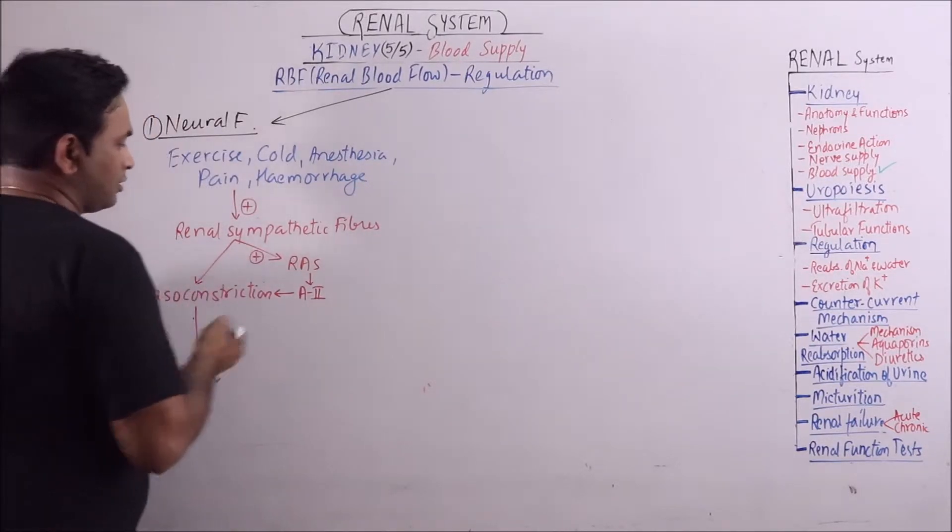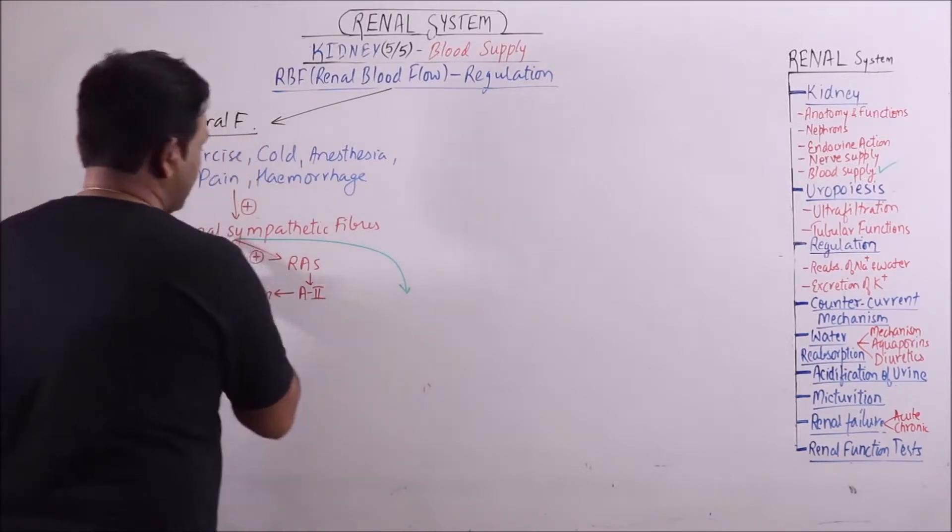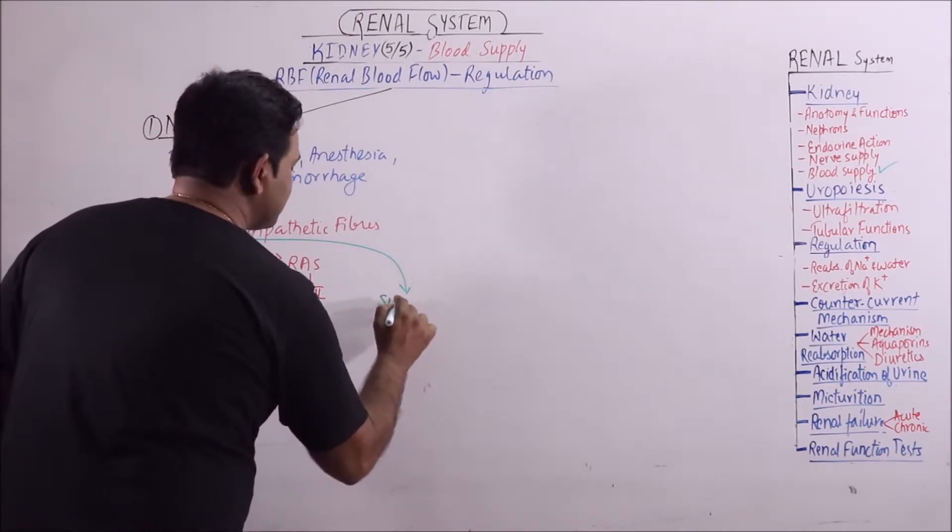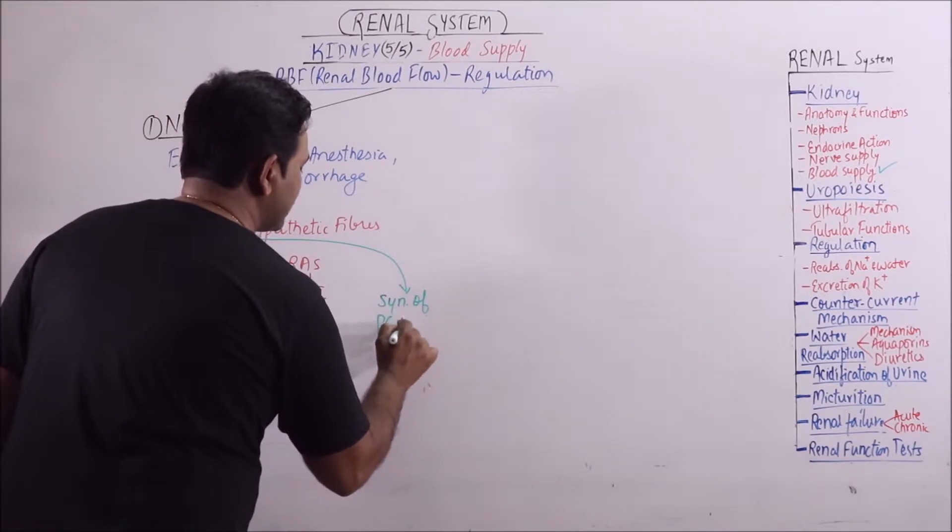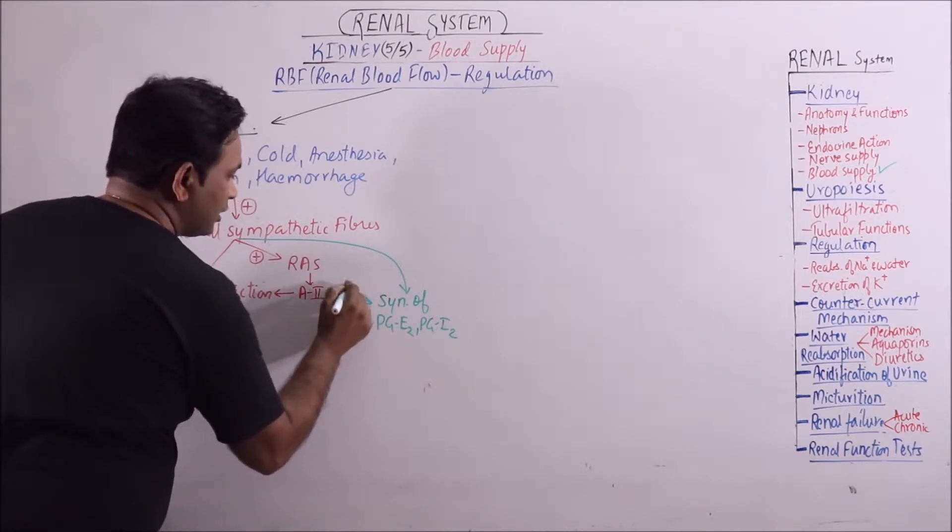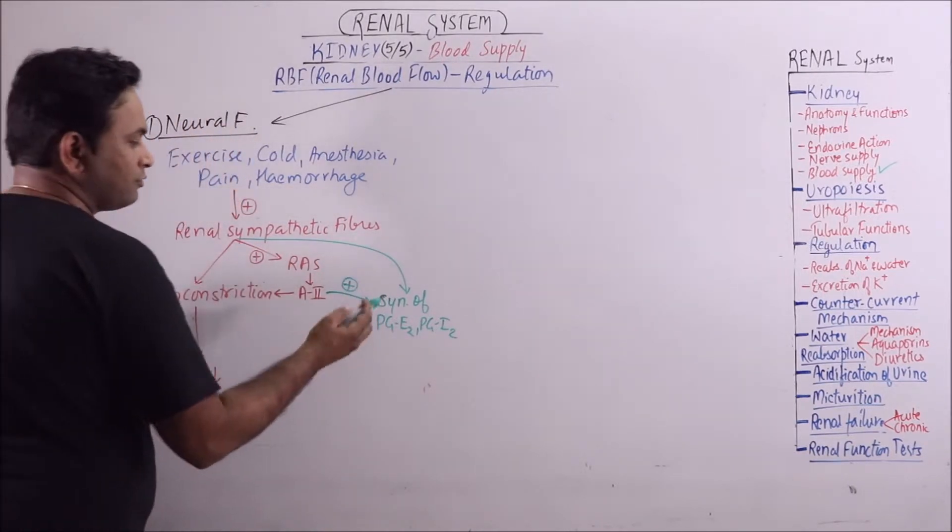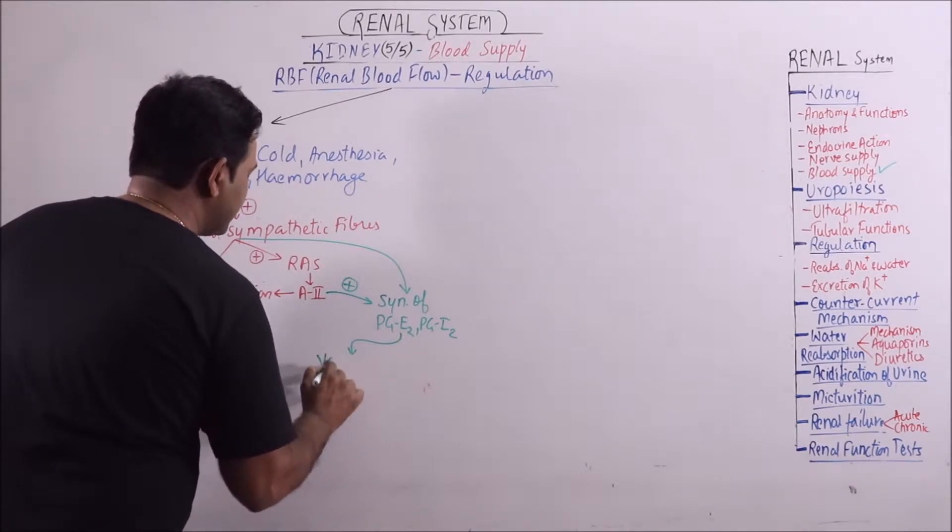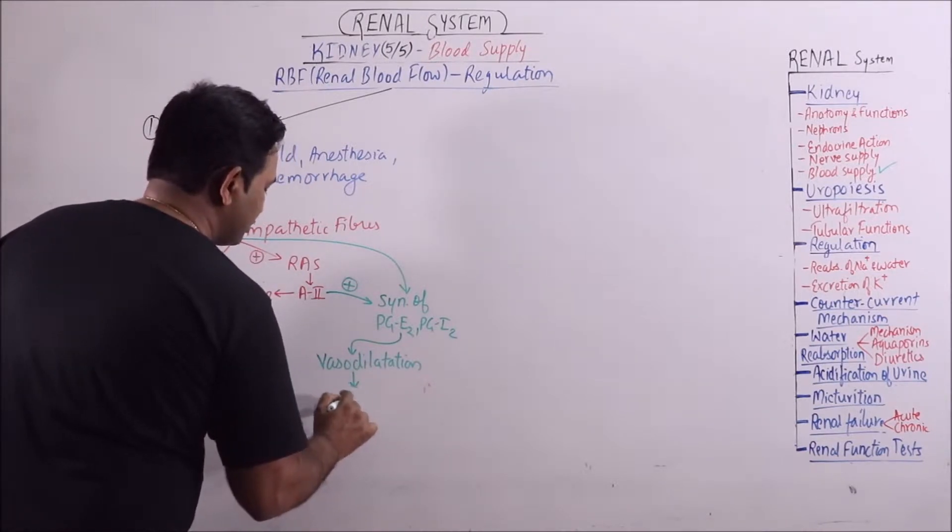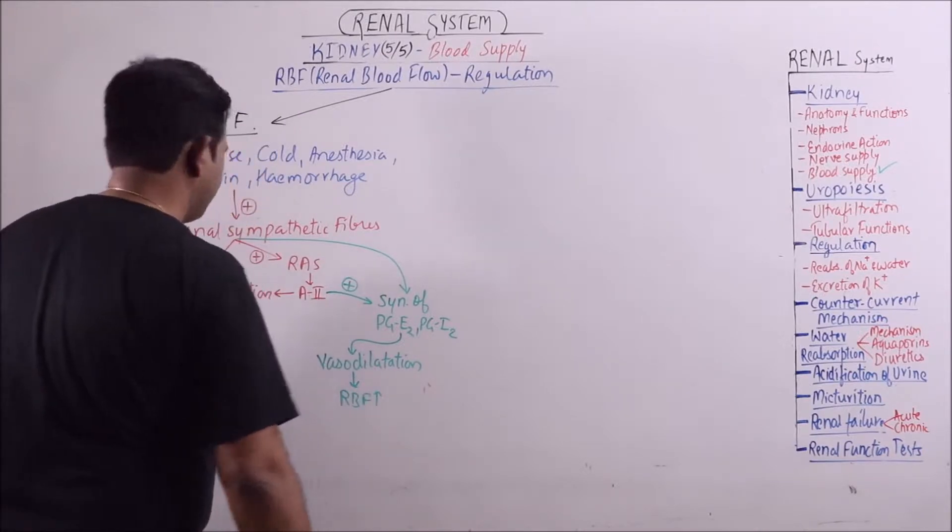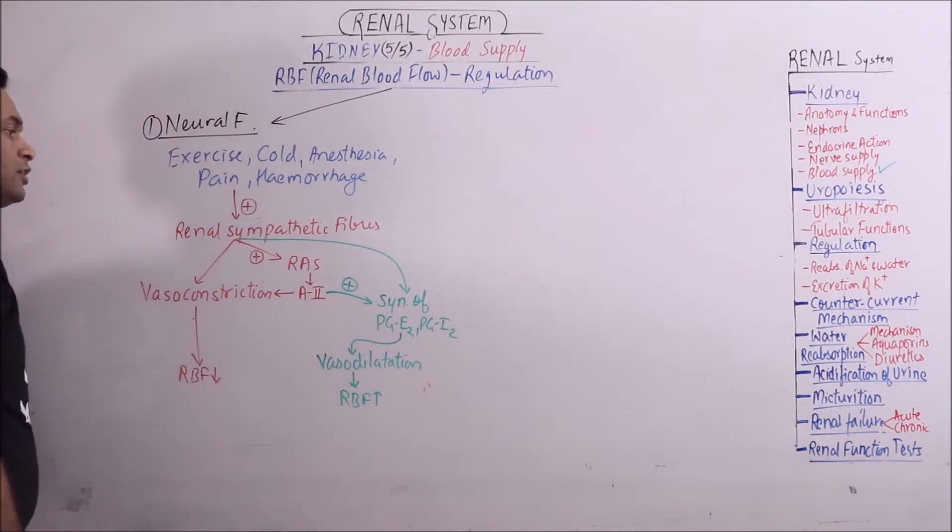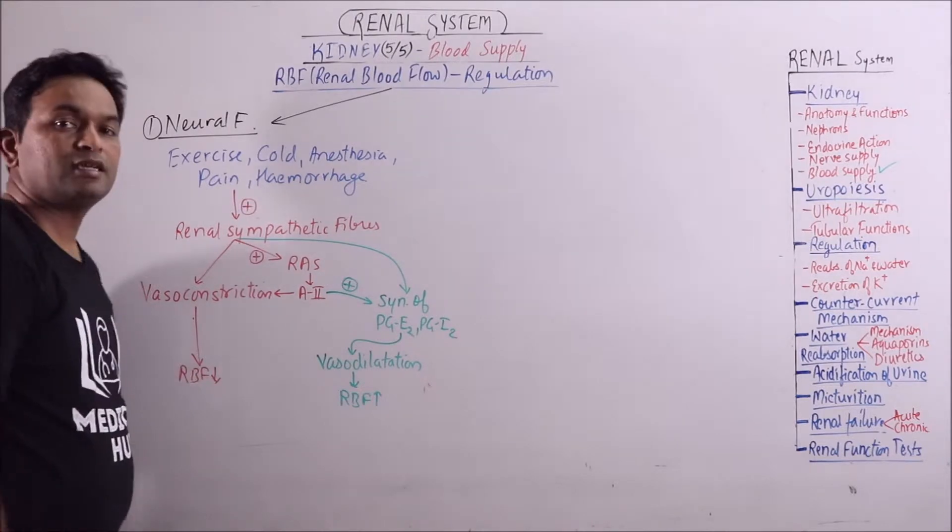But important thing is that the activation of sympathetic fibers, renal sympathetic fibers, also promote the synthesis of prostaglandin E2 and prostaglandin I2. Even angiotensin 2 also promote the synthesis of these prostaglandins. These result in vasodilatation and finally resulting in increase in RBF. So on one side RBF is decreasing, on another side RBF is increasing. Final outcome is that there is no significant change in RBF.